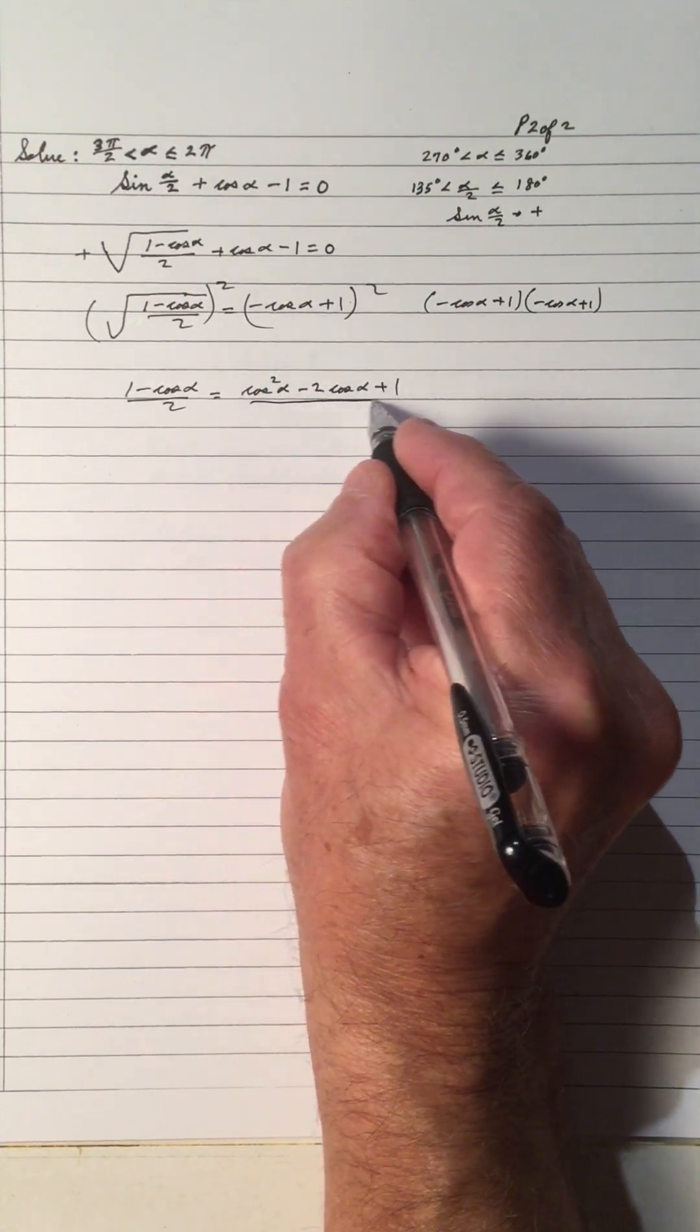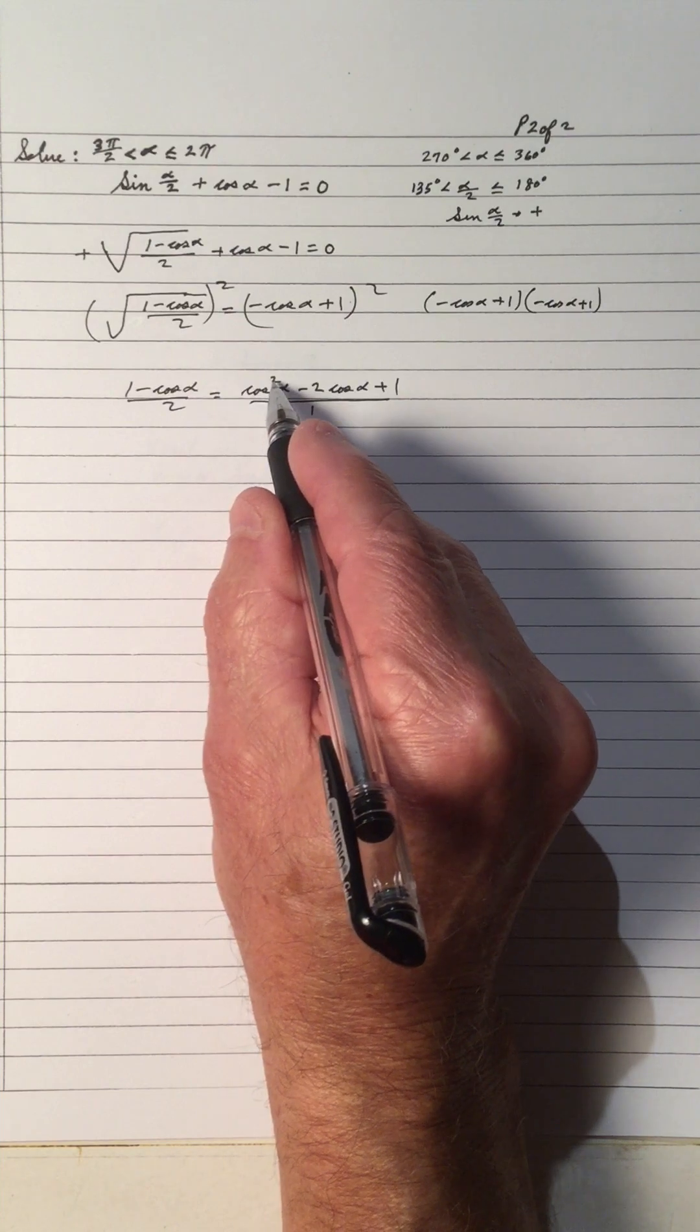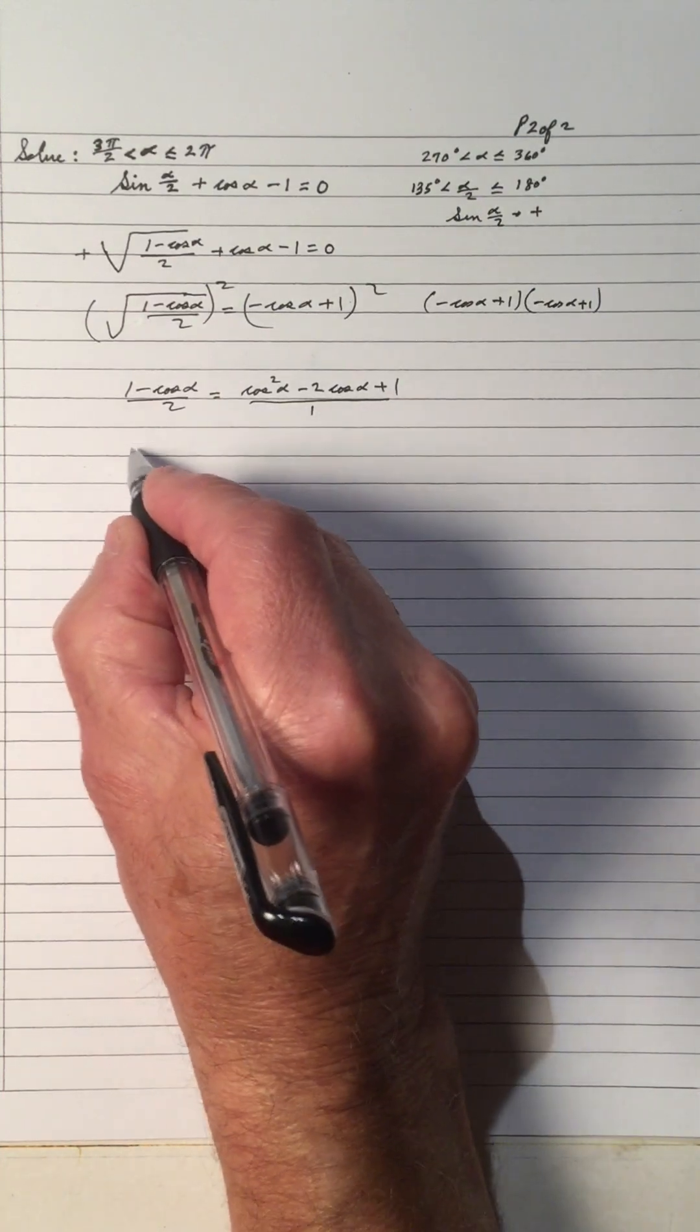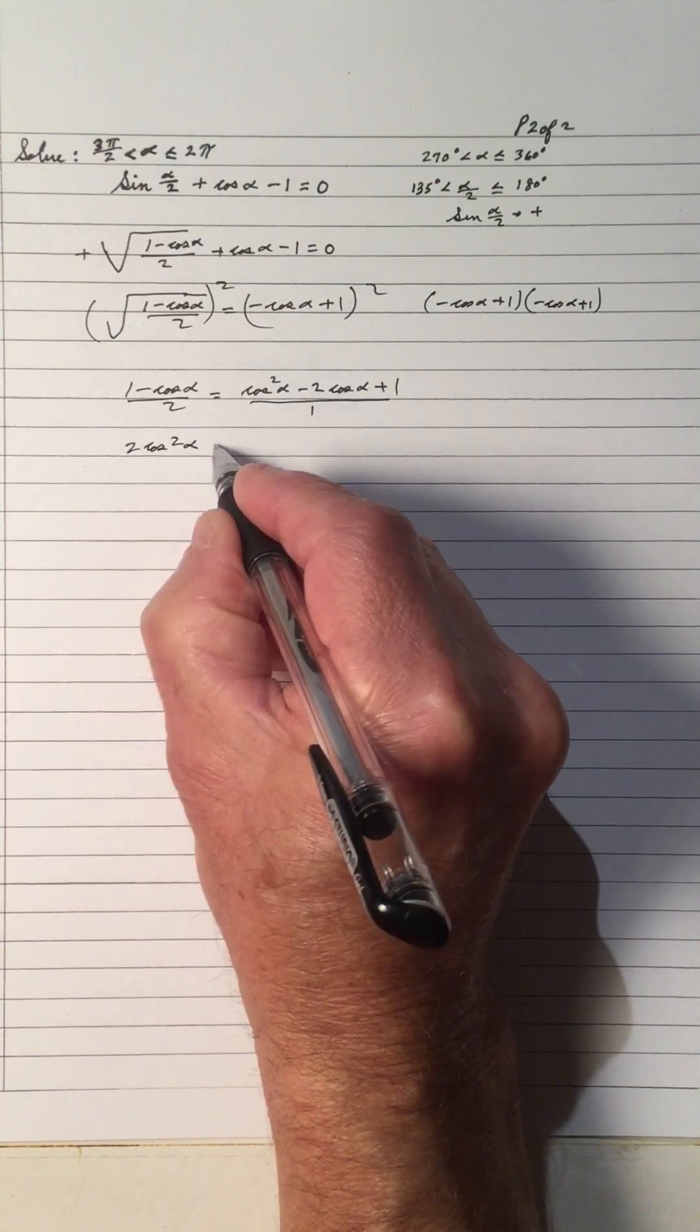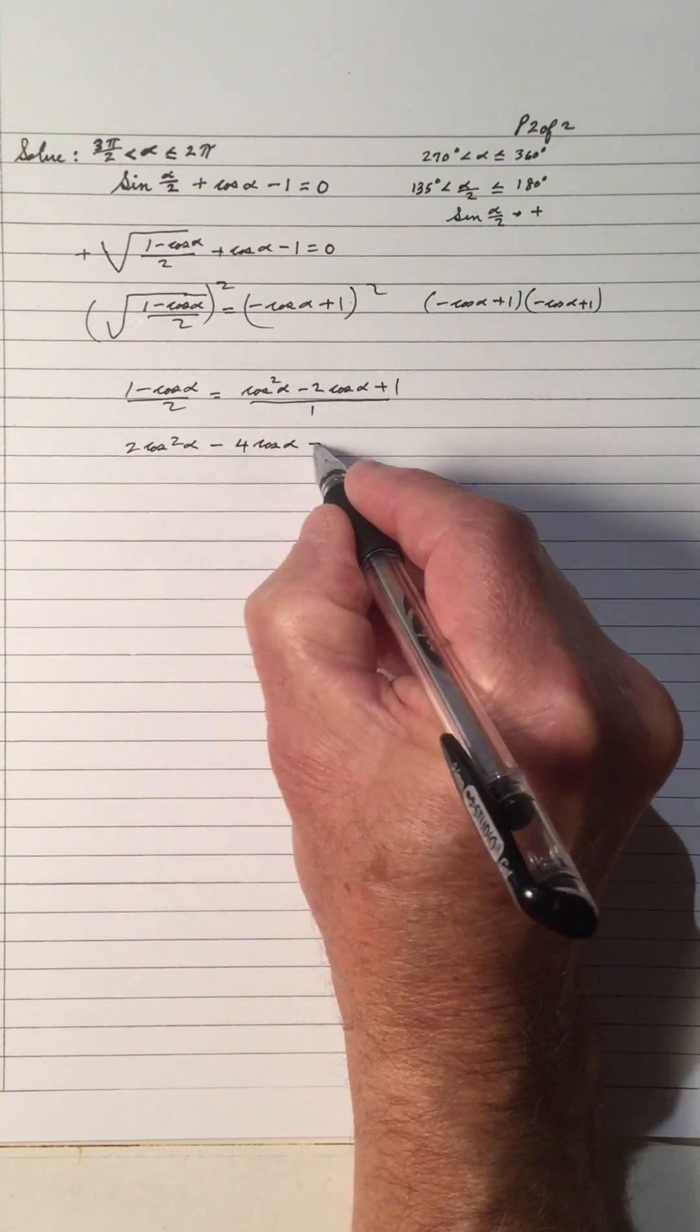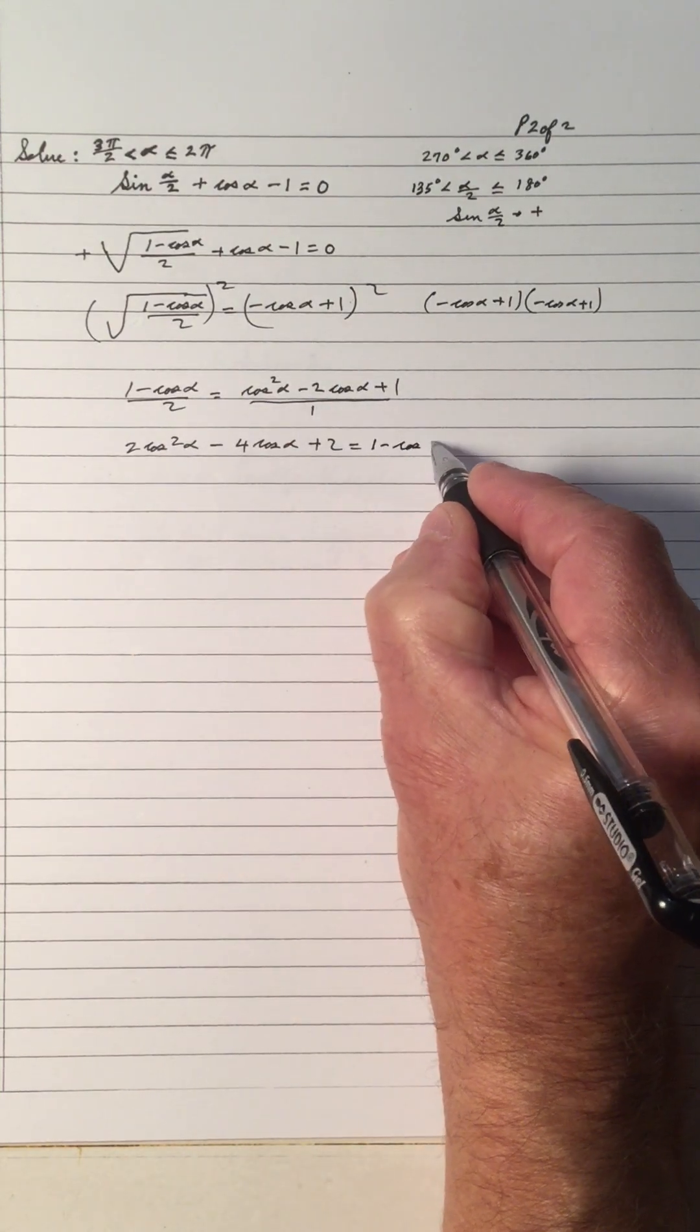We have it over 1, we have a fraction, so let's put this over 1 and cross multiply. I'm cross multiplying 2 by this. 2 times this term becomes 2cos²α, 2 times that's 4 cos α, 2 times 1 is 2. Multiply these two and we get 1 - cos α.